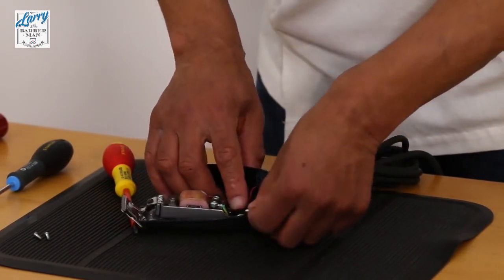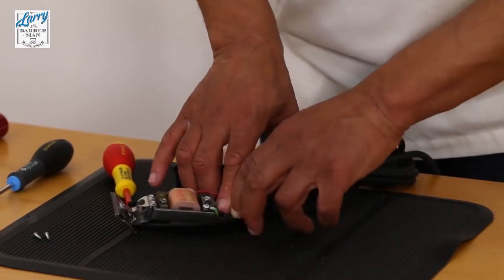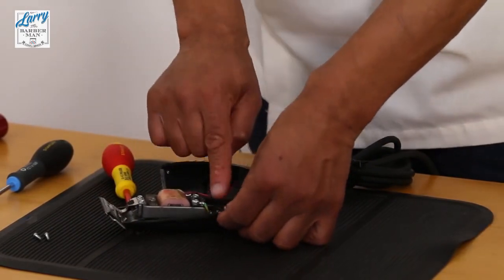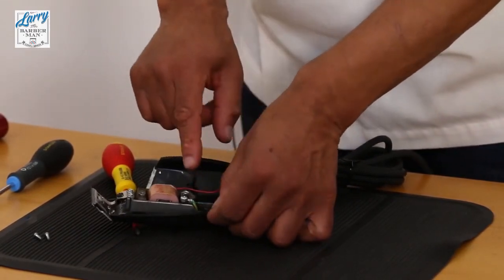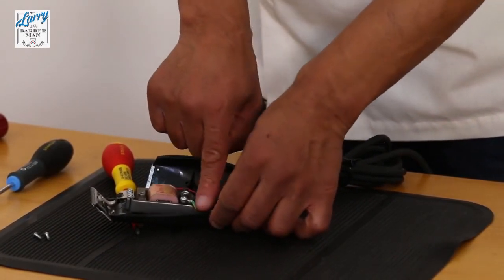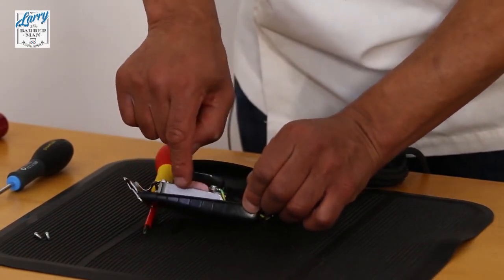So run all those wires down the side and don't let anything run over the top part. Let it sit inside of the cutout notch on the armature here.